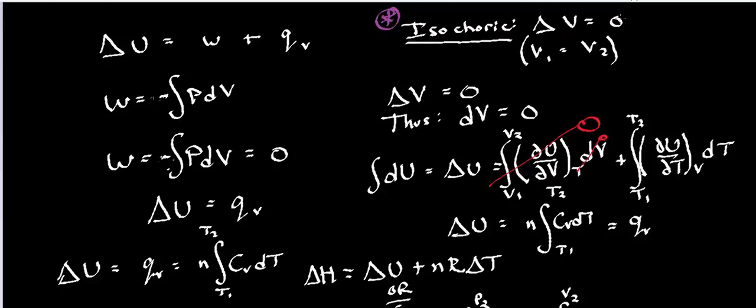Now we talked about many videos ago when we talked about PV work and introduced it, that any time you have no change in volume, there's no work that's done. And the reason for that is delta V is zero, so dV is also zero.